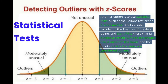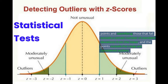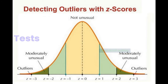Another technique for identifying outliers is to use statistical tests such as Grubbs' test or the z-score method. These tests can help us determine if a data point is significantly different from the rest of the data and therefore could be considered an outlier.